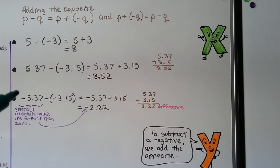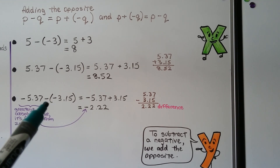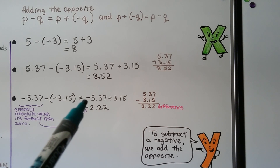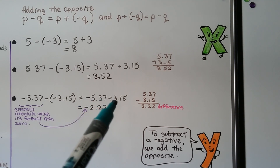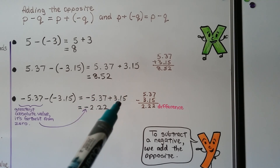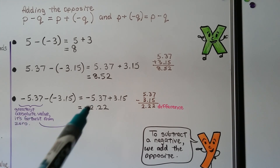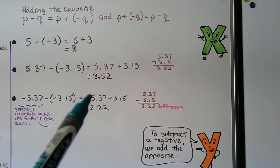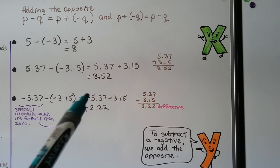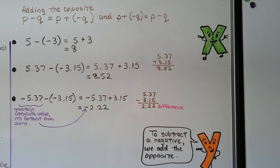For negative 5.37 minus a negative 3.15, this turns into a plus sign and that turns into a positive. So we have negative 5.37 plus 3.15. They have different signs — one is negative and the other is positive — so we find the difference: it's 2.22. We take the sign of the greatest absolute value, the one farthest from zero. Since 5.37 is farther from zero than 3.15, we take its sign — negative. So remember, to subtract a negative, we add the opposite.